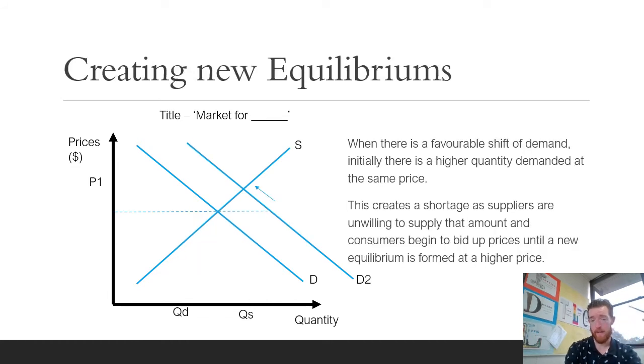Creating new equilibriums: when there's a favorable shift in demand, initially there is a higher quantity demanded at the same price. You can see that from the original equilibrium we're now over here so a greater quantity is being demanded at the same price. That original amount is still being supplied, which creates a shortage here.